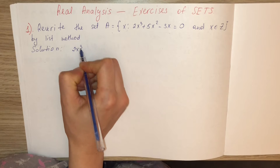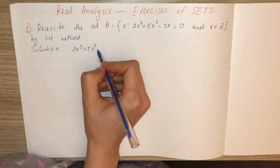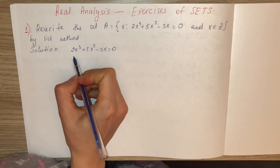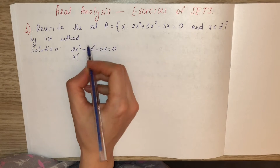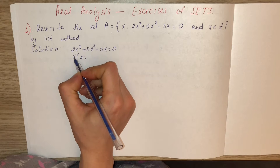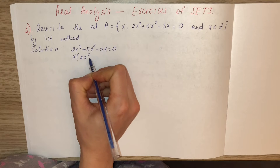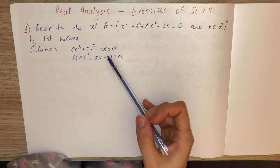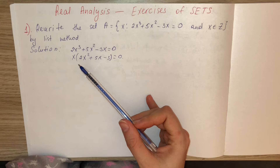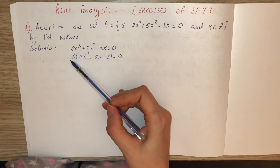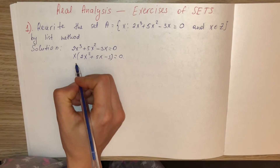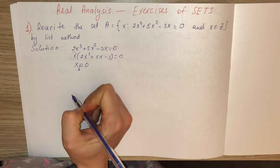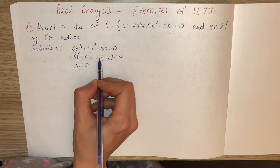2x³ + 5x² − 3x = 0. If we factorize this equation, we get x(2x² + 5x − 3) = 0. To find the solutions, we equalize both factors to 0. So x = 0 is our first root.